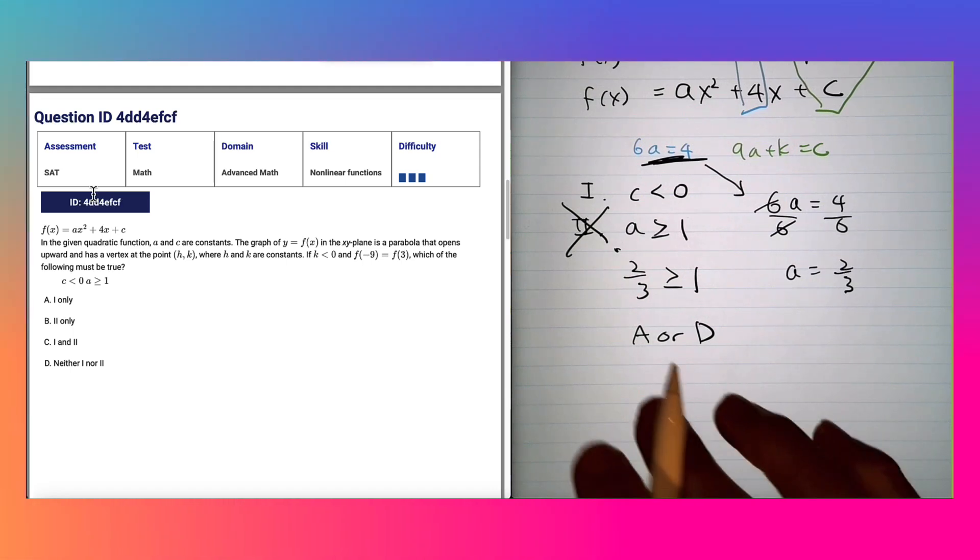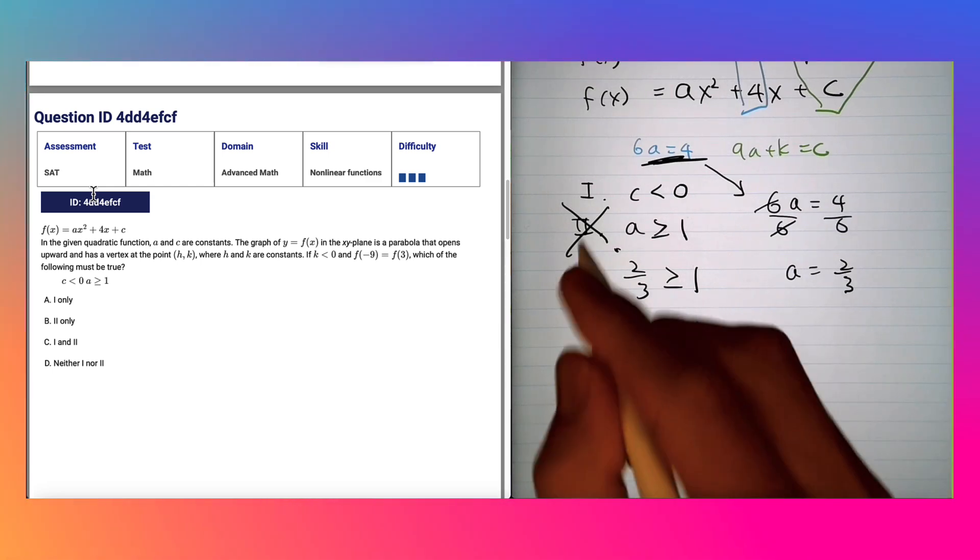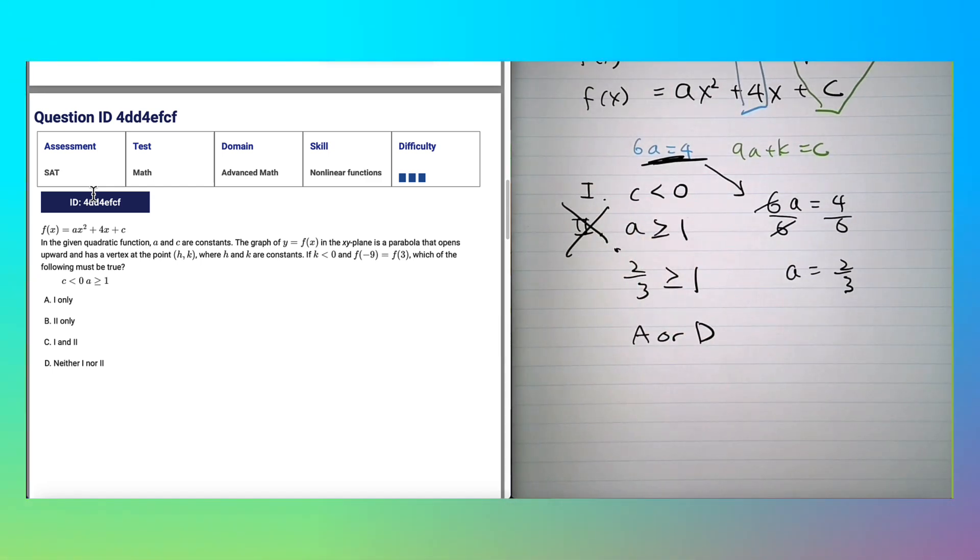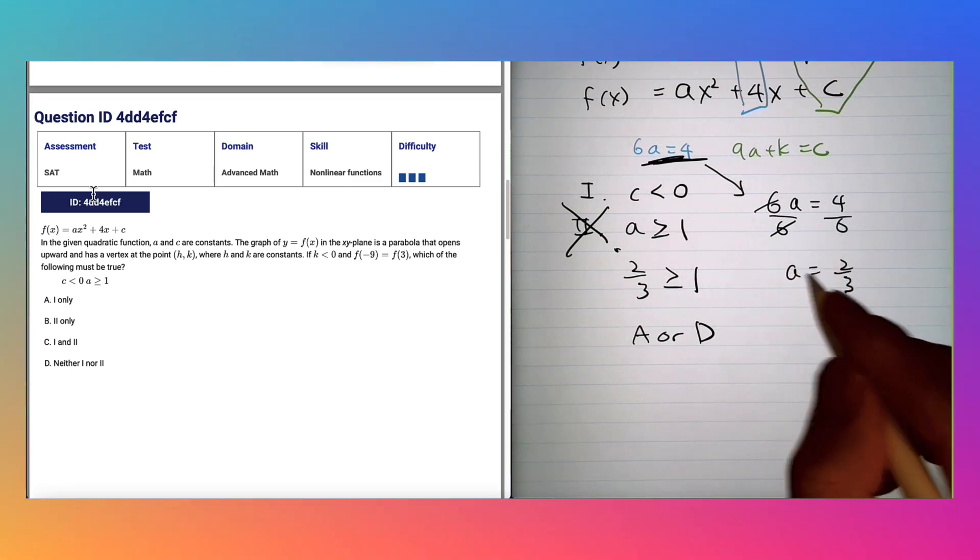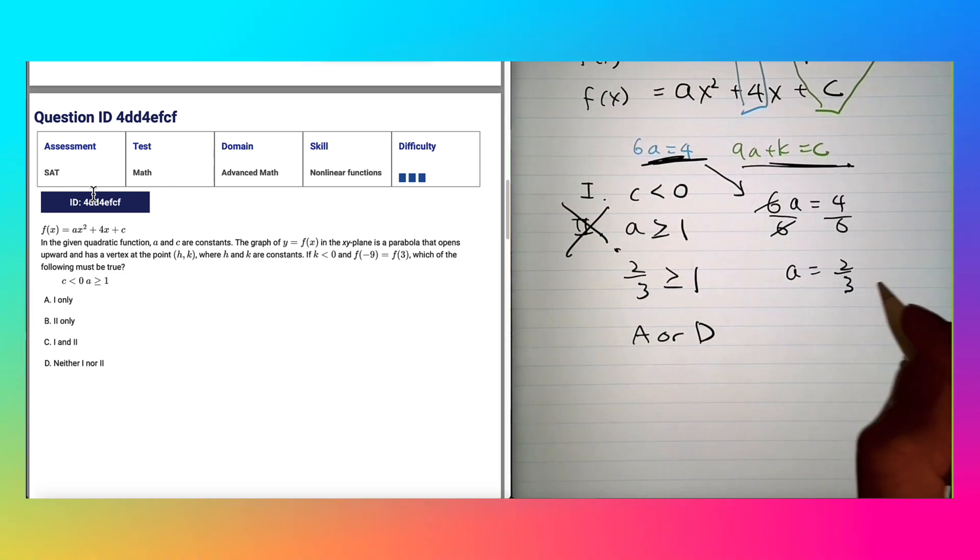Assuming you have enough time, let's actually eliminate A or D here. So the first condition says c is less than zero, or it has to be zero or less than zero.